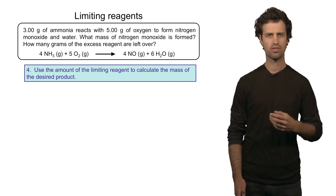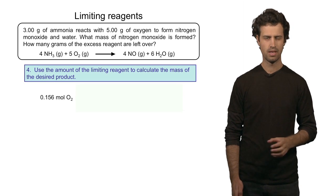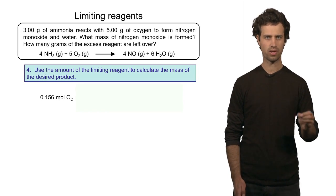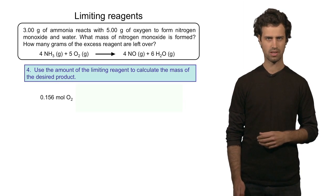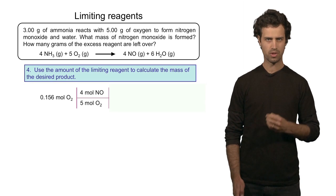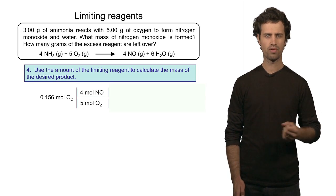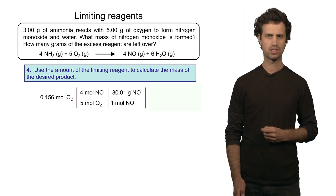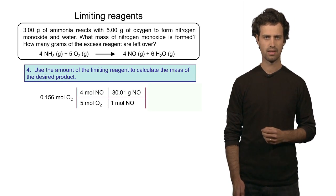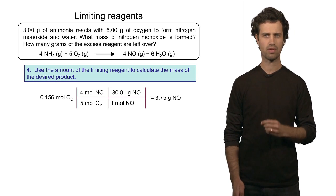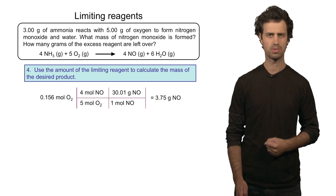Let's first calculate how much product we form. We take the number of moles of the limiting reagent, which we just calculated — 0.156 moles of oxygen — and convert that into the number of moles of nitrogen monoxide, the product, by multiplying by the mole ratio. Then we multiply by the molar mass of nitrogen monoxide. We find a total of 3.75 grams of nitrogen monoxide formed in this reaction.